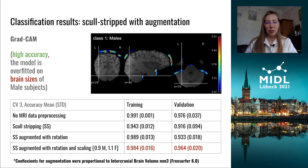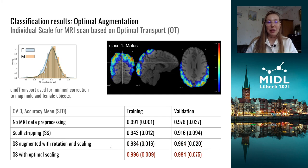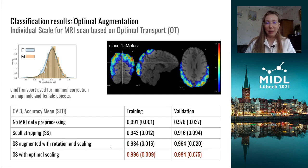We could have stopped our experiments there, yet we were eager to get model attention on inner brain structures. We decided to apply individual scale coefficients to map distributions, rather than just adding additive Gaussian noise to the brain sizes of the groups.